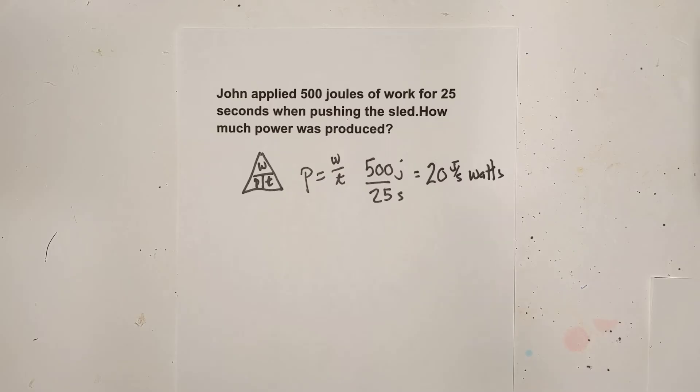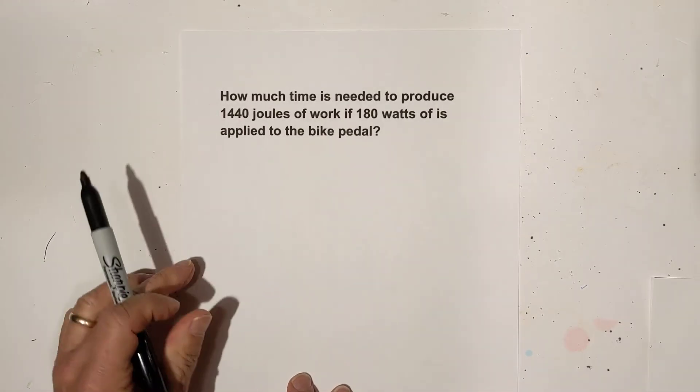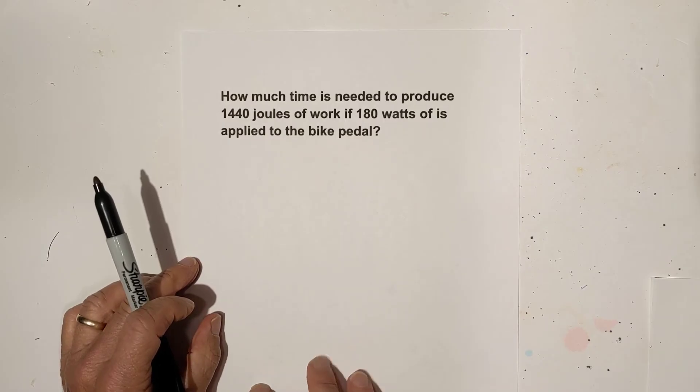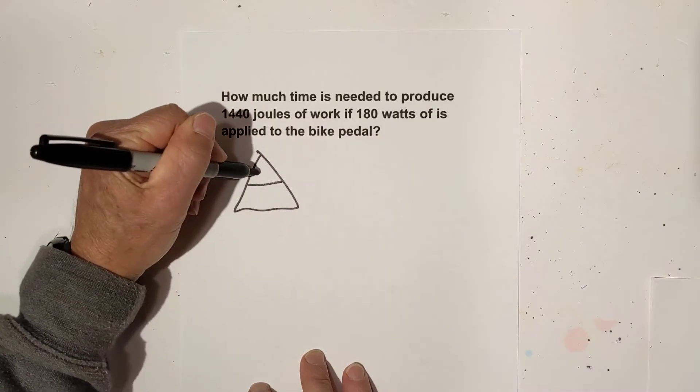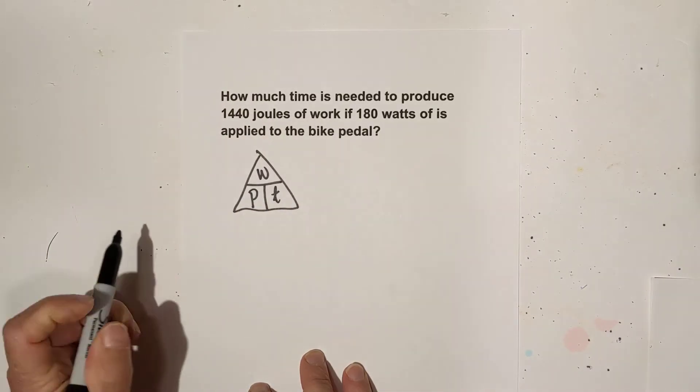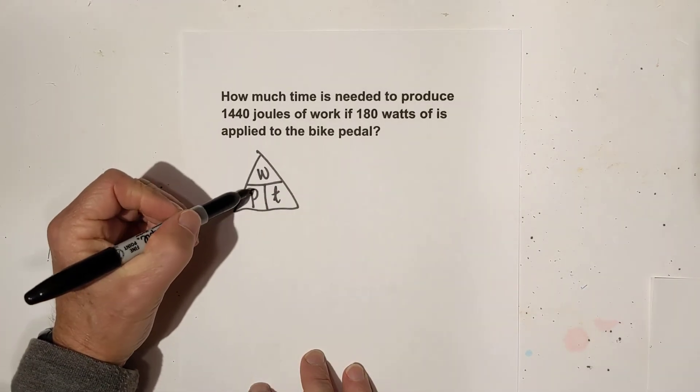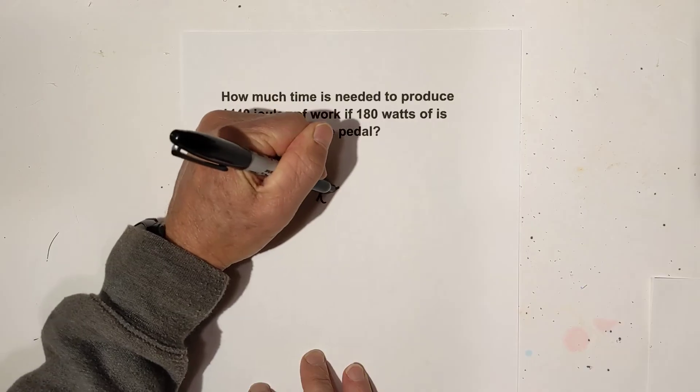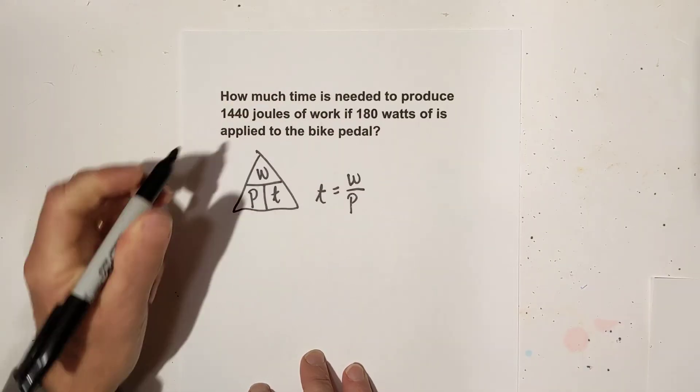Now we're going to do two that are slightly different. In this one, how much time is needed to produce 1,440 joules of work if 180 watts is applied to a bike pedal? So let's look at our triangle again. Work, power, time. This time we are looking for time, and time is work over power.